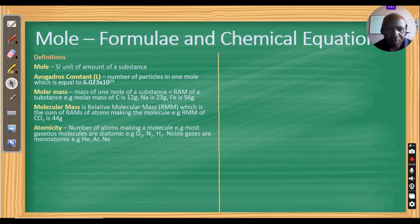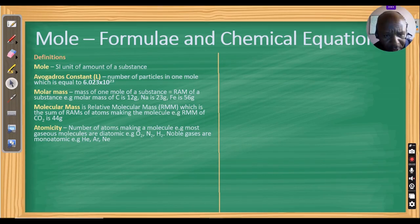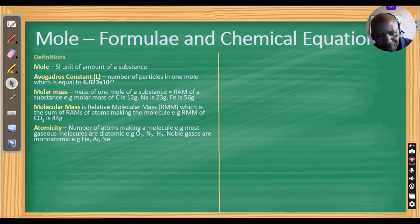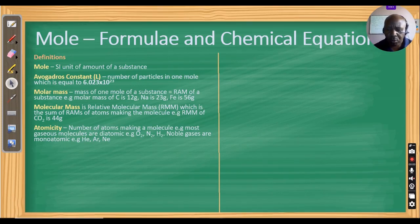Atomicity is the number of atoms making a molecule. For example, O₂ for oxygen is two atoms of oxygen, so oxygen gas is diatomic. Carbon dioxide has three atoms because there is one carbon and two atoms of oxygen.